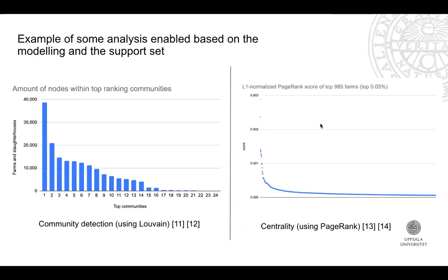Other analyses are enabled once the graph model and support sets are in place. Community detection was tested using a Louvain algorithm implementation — a common algorithm for identifying trading communities between slaughterhouses and farms. This is relevant for researchers to understand how trading communities behave and what their impacts are when there is a policy change.